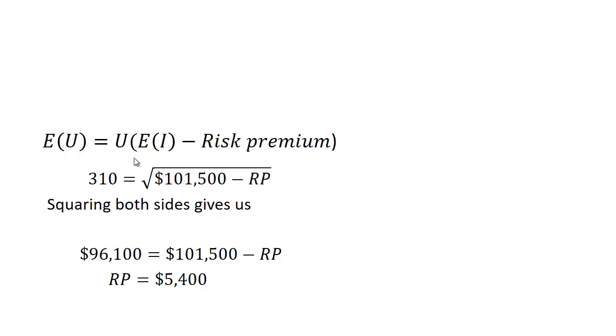We set the expected utility equal to the utility of the expected income minus the risk premium, and we're going to solve for the risk premium, RP. We know the expected utility is 310, and the expected income is $101,500.